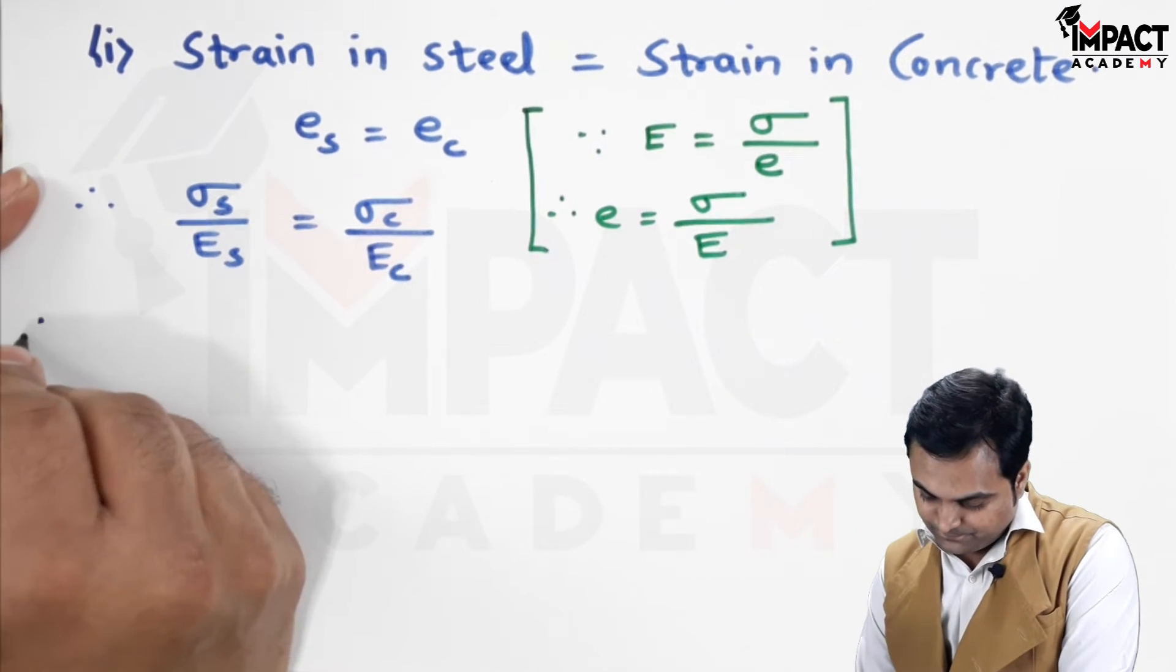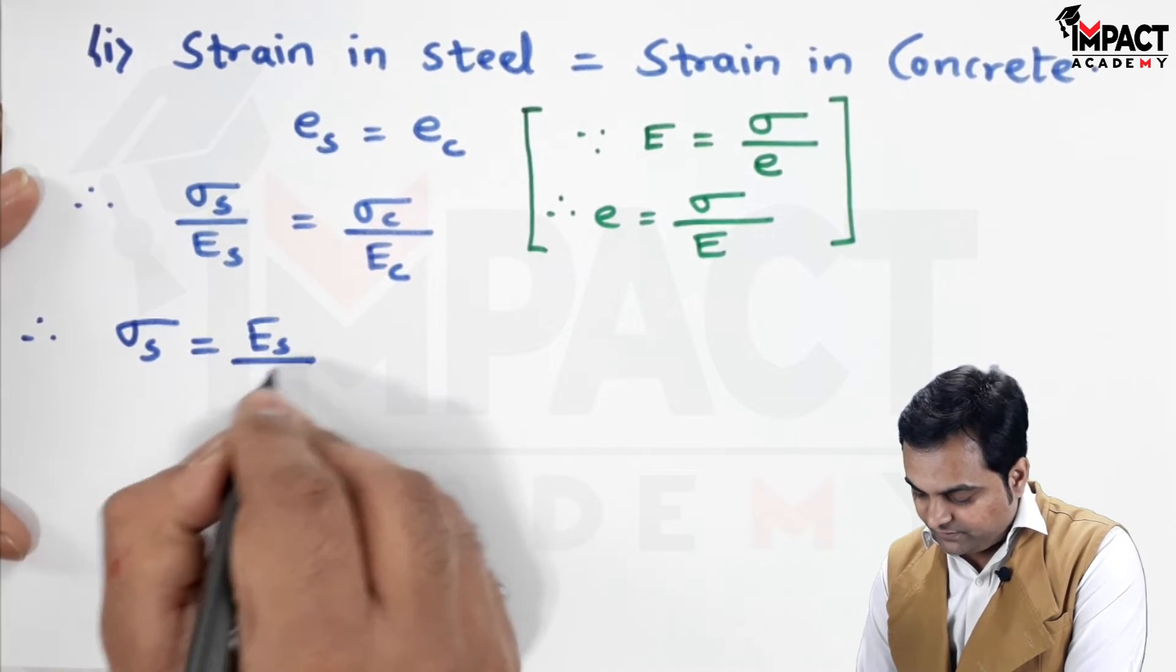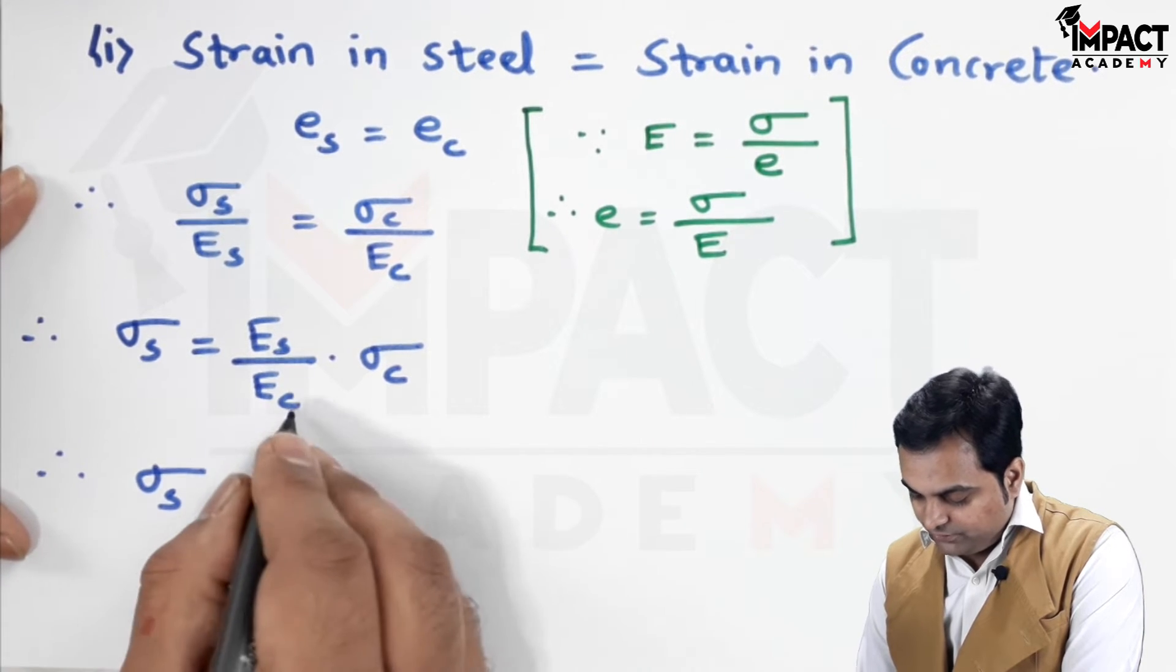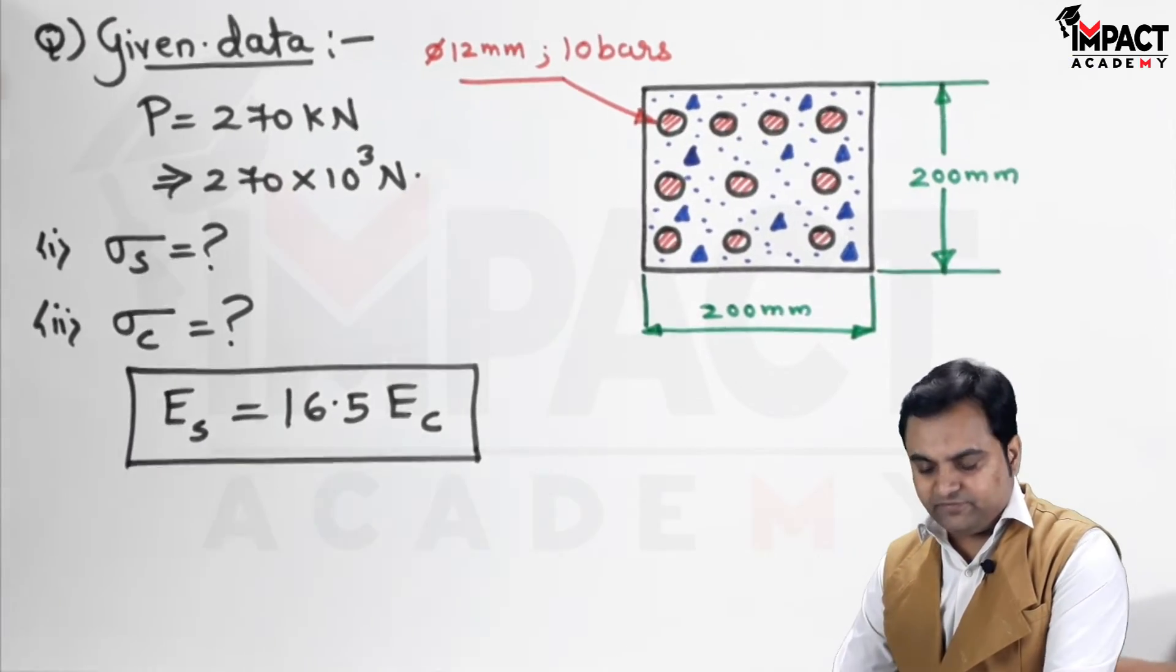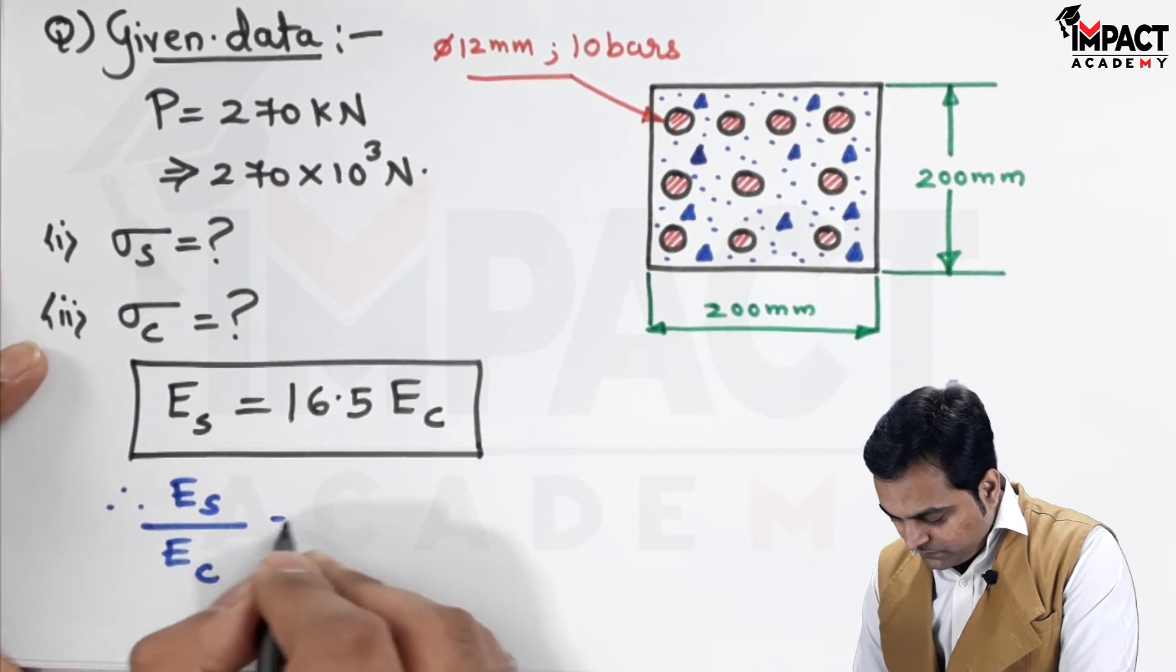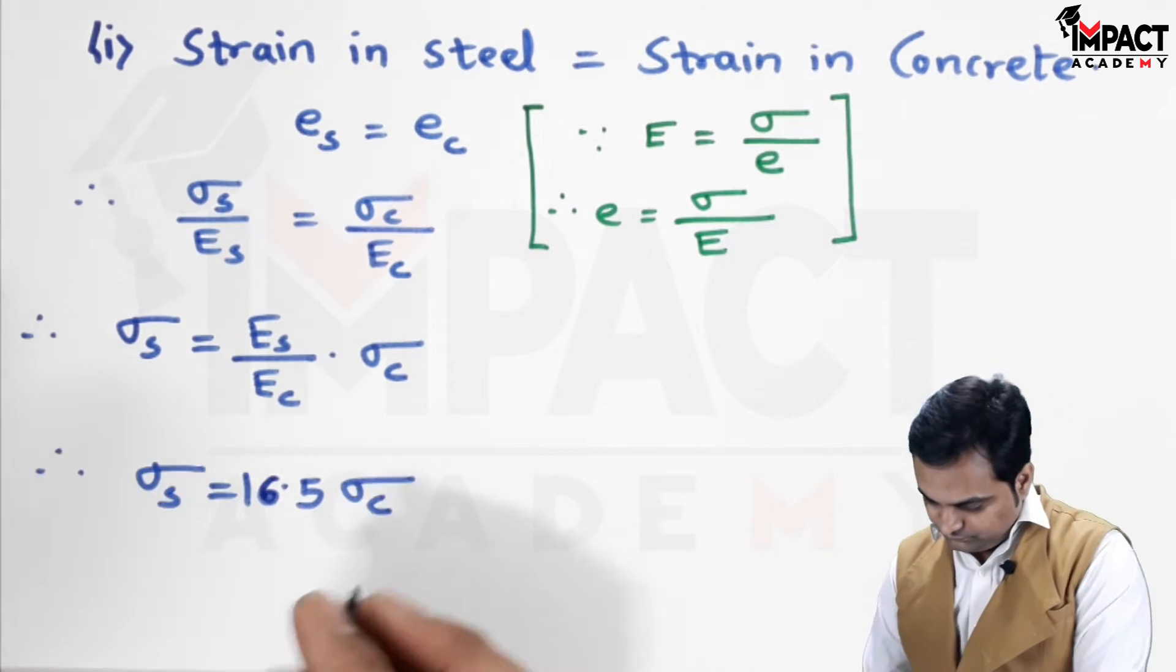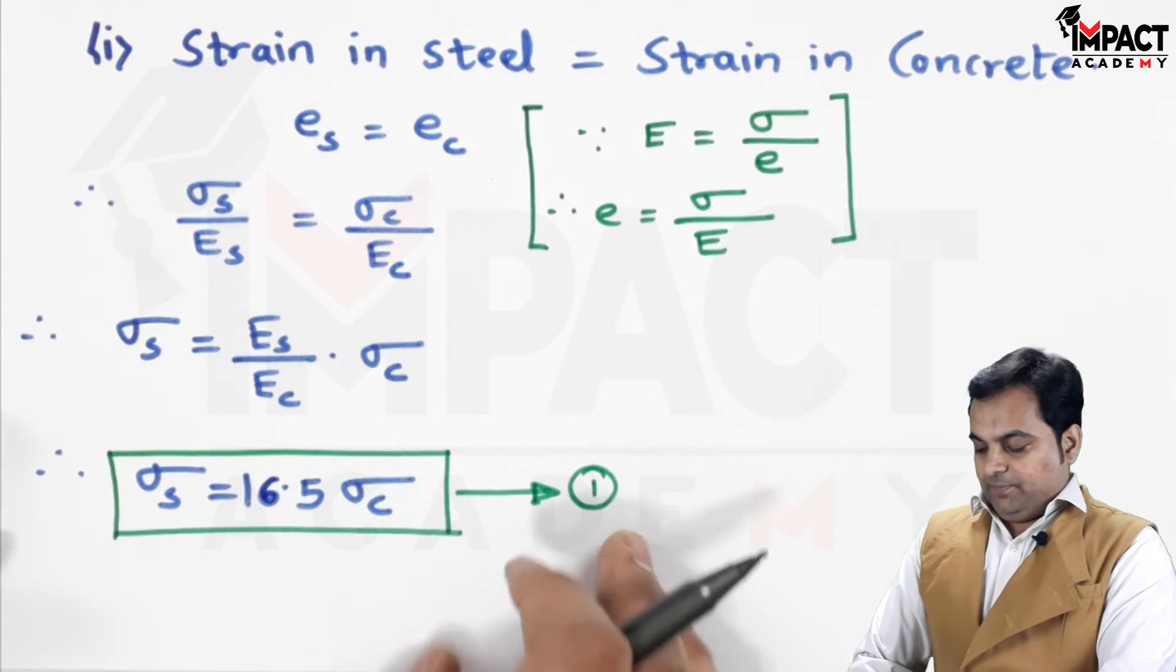Now, after this, sigma S, I will keep it on one side. E suffix S would be shifted on to the other side in the denominator. We have E suffix C into sigma C. So, therefore, now, E S upon E C, since the relation is given, E S is 16.5 times of E C. So, therefore, E S upon E C will be 16.5.